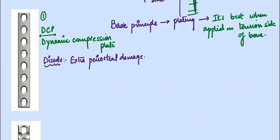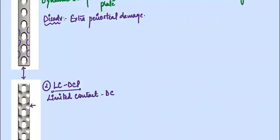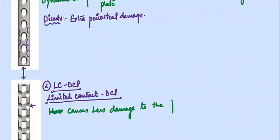The disadvantage of the DCP is extra-periosteal damage. To counter this problem, what has been developed is the second image — the LCDCP, or Limited Contact DCP. If you compare the upper and lower images, the length, width, and holes are the same, but the extra portions of the plate have been removed so it has limited contact with the bone and causes less damage to the periosteum.